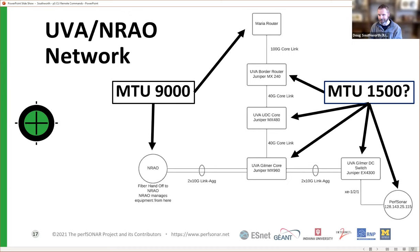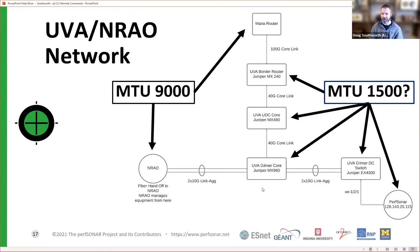We asked the network engineer for a block diagram of their network. Maria is the local REN giving them connectivity. From there it jumps through a series of gear — the UVA network side — and about three hops in, there's a 2x10 link that runs over to NRAO. We know the NRAO node is set up to an MTU of 9000 and the Maria router is set there as well, but the UVA campus is at 1500. We don't know where that MTU change is made — whether it starts at the edge or further in — so we have a little investigation to do.